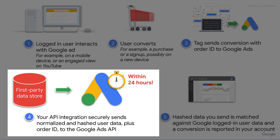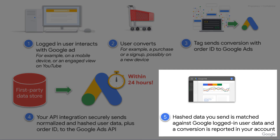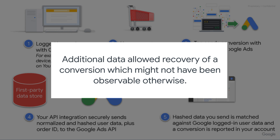A separate process in my system then looks up information about Nancy in my company's first-party data sources, normalizes and hashes the data, and securely sends it to Google using the Google Ads API. With that additional information, Google Ads can map Nancy's engaged view on YouTube to the conversion on my site and reports the conversion for my campaign. In summary, the additional enhanced conversion data allowed Google to recover a video view conversion which might not have been observable otherwise, leading to improved conversion reporting that in turn improves bidding and campaign optimization.